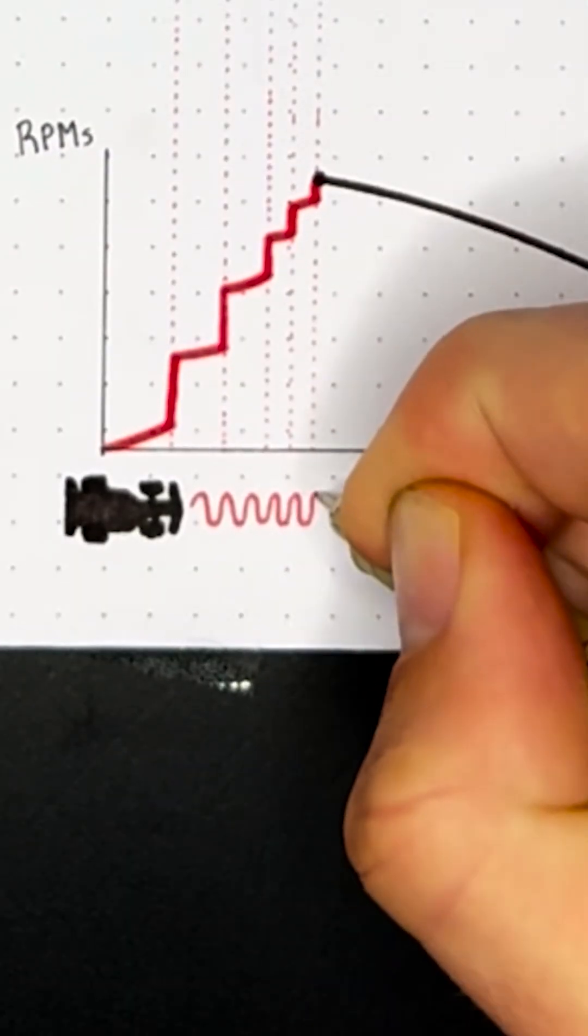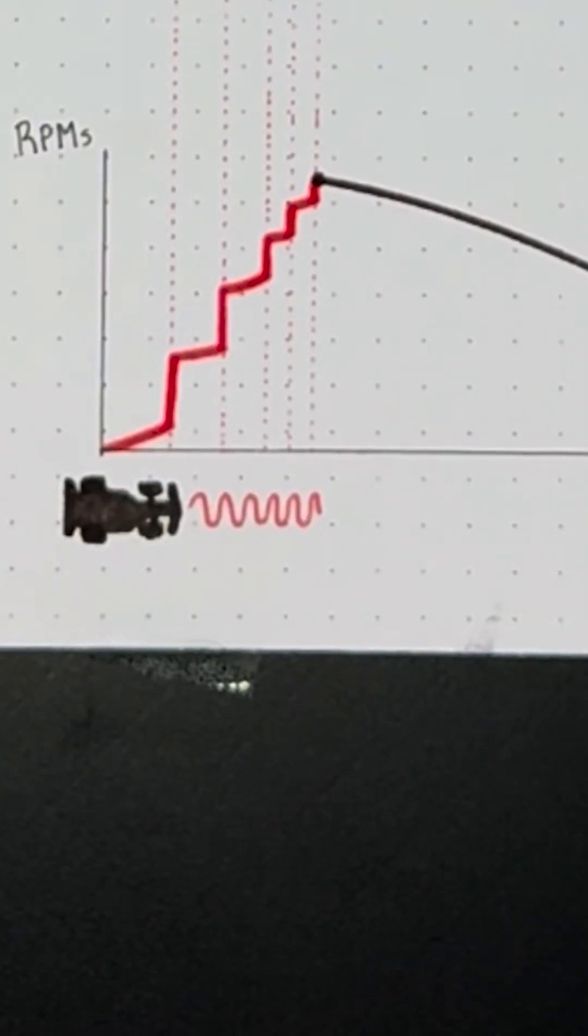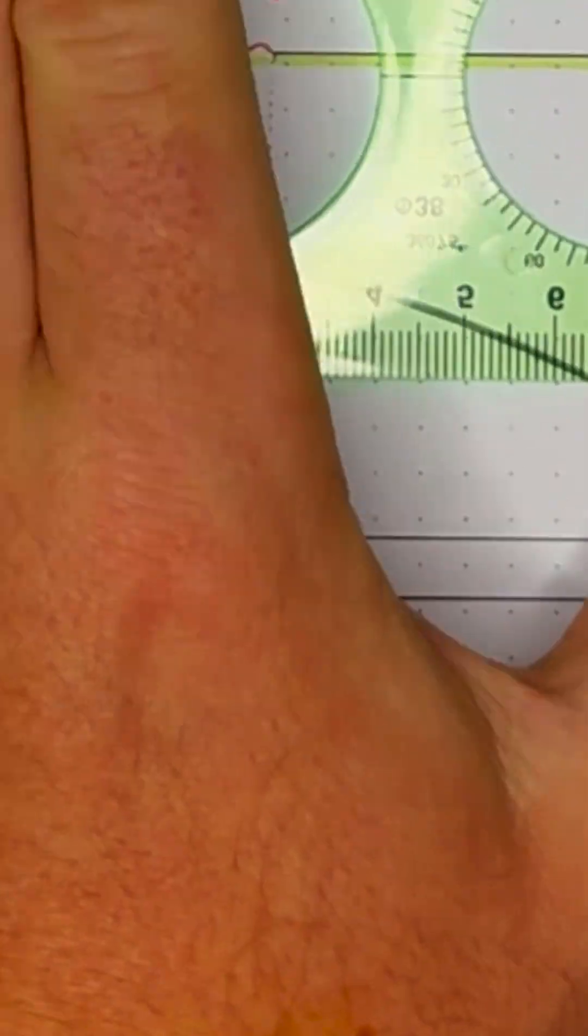It's kind of like if an F1 car launched off the line with its tires skidding. There's no traction, no precision, just chaos, until the wheels finally lock in with the track.